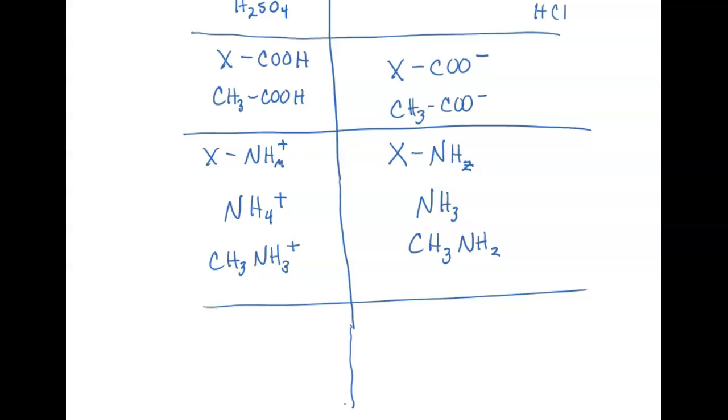There's the strong bases, things like NaOH, Ca(OH)2. But just like the strong acids, they don't really have a conjugate.